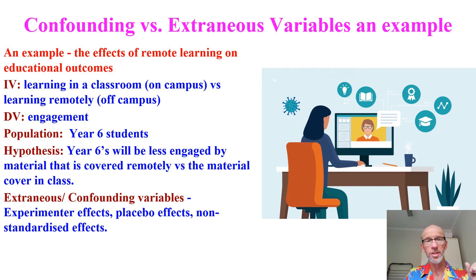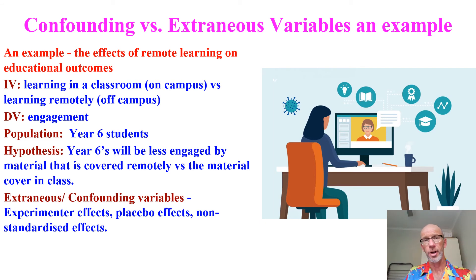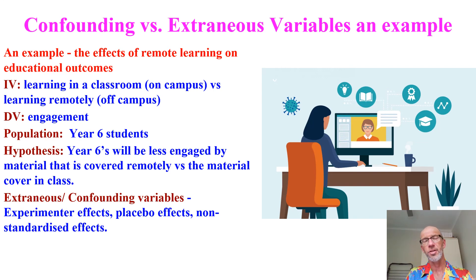Non-standardized effects could include time of day, room temperature, audio quality, and lighting — all things that can impact the data. Now, if these become confounding, that means we've already collected the kids' self-rating scores of engagement both in class and remotely, and someone has pointed out we didn't single blind it, so placebo effects may have affected the DV. We didn't double blind it either, so teacher behavior may have affected results. Now we're not sure whether it was their actions or the actual remote versus class-based learning that affected the DV.